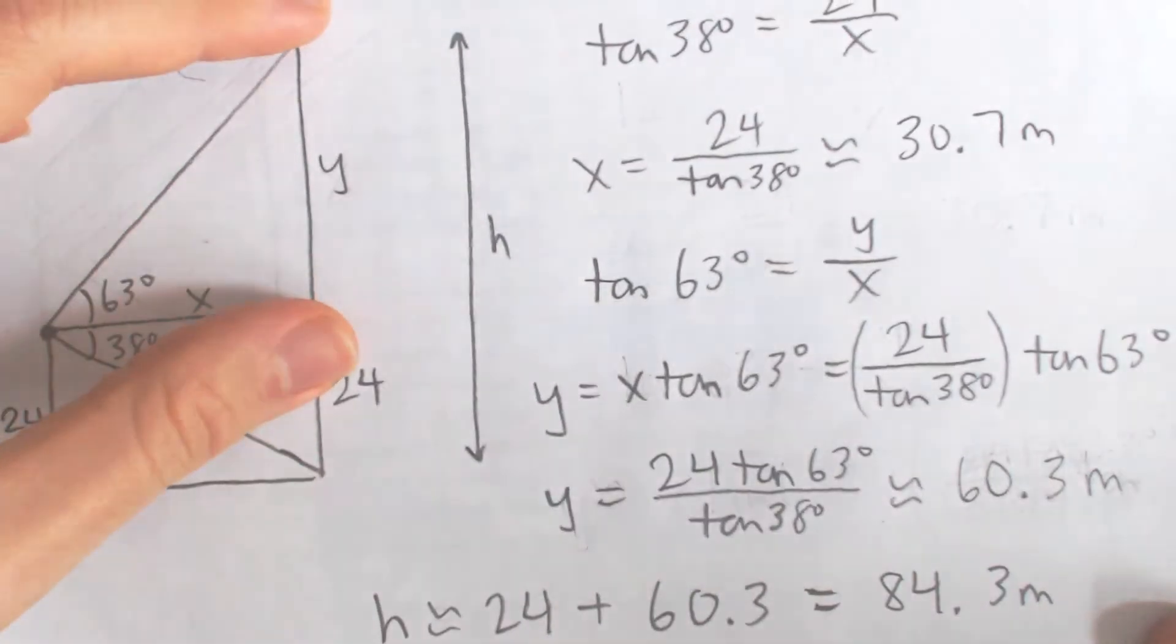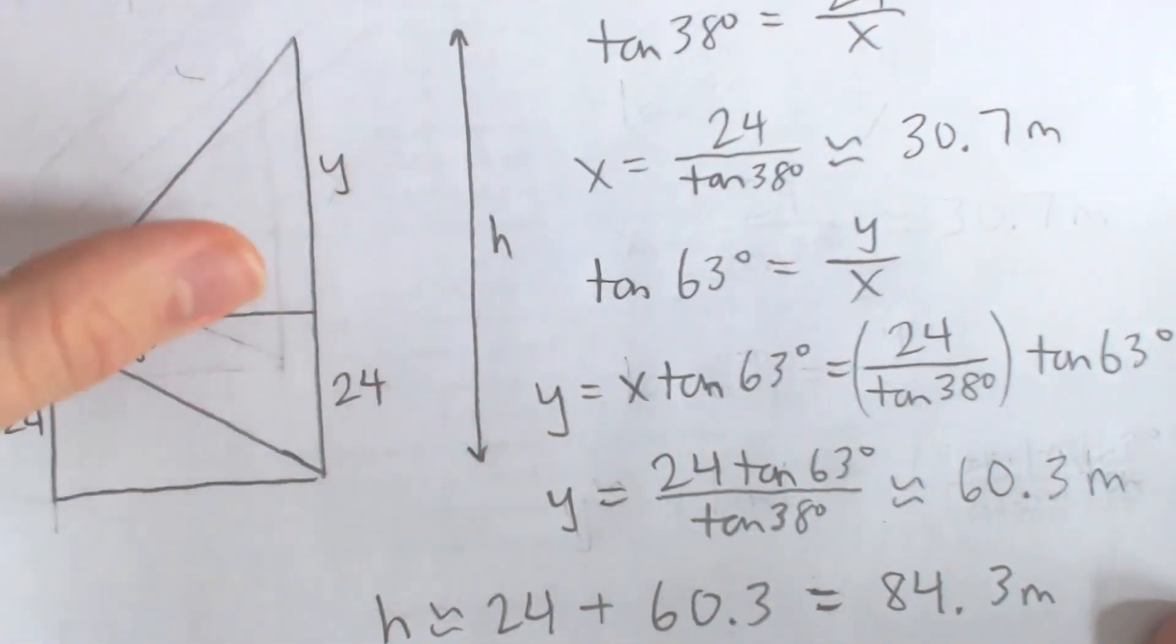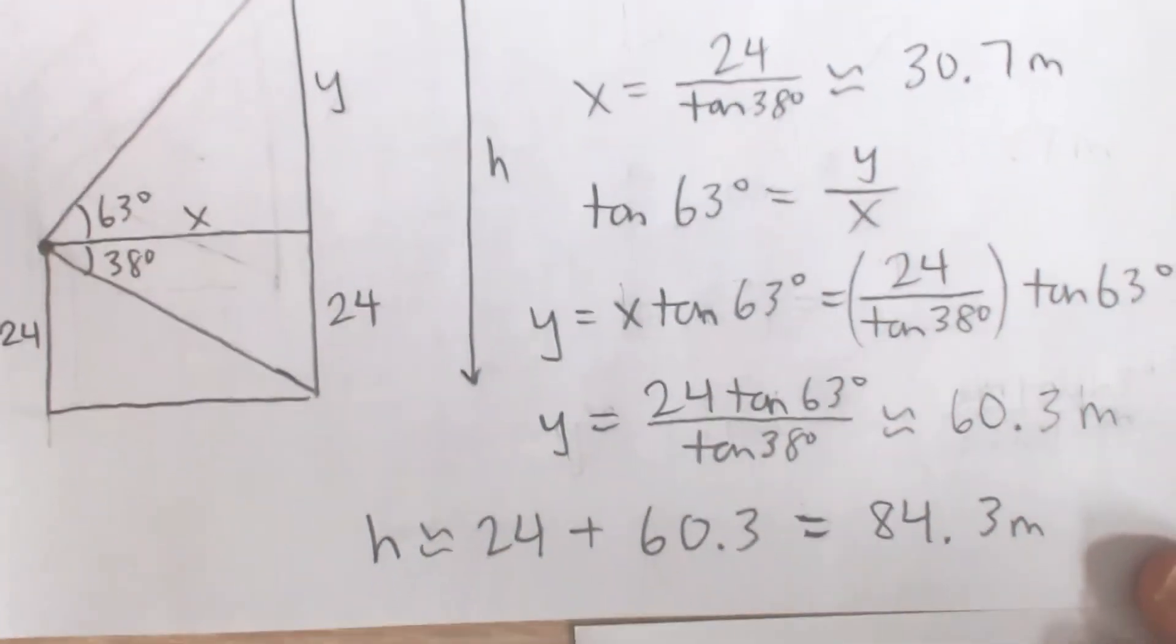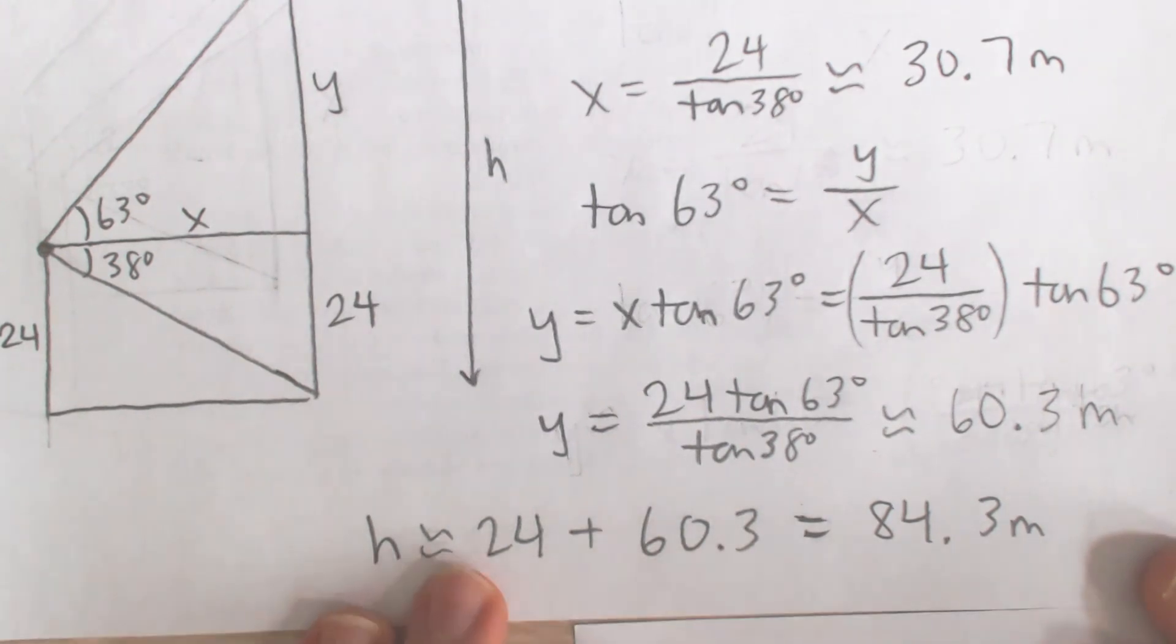Now we've figured out what y is, so what's the height of the building? Well, that's just y plus 24 meters. In other words, 24 plus 60.3, which is about 84.3 meters.